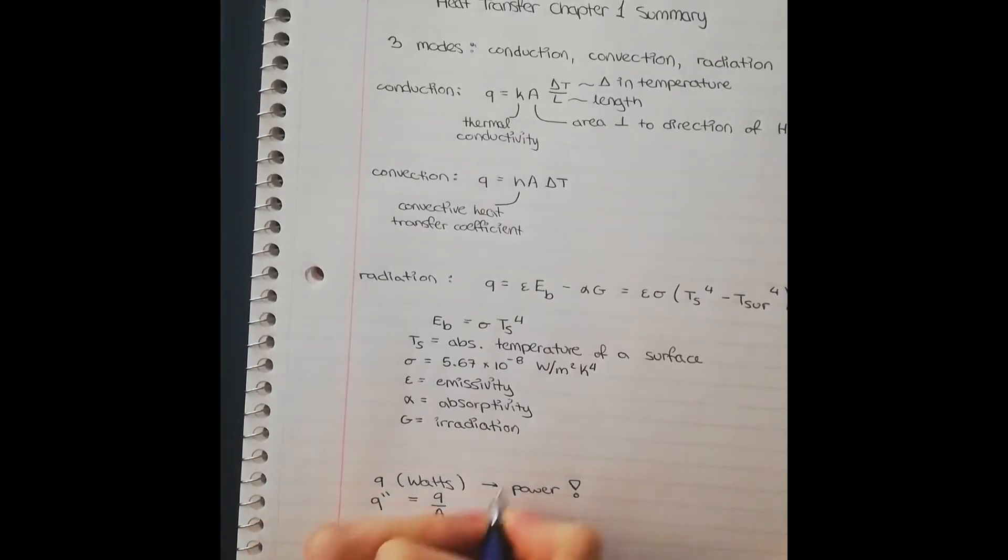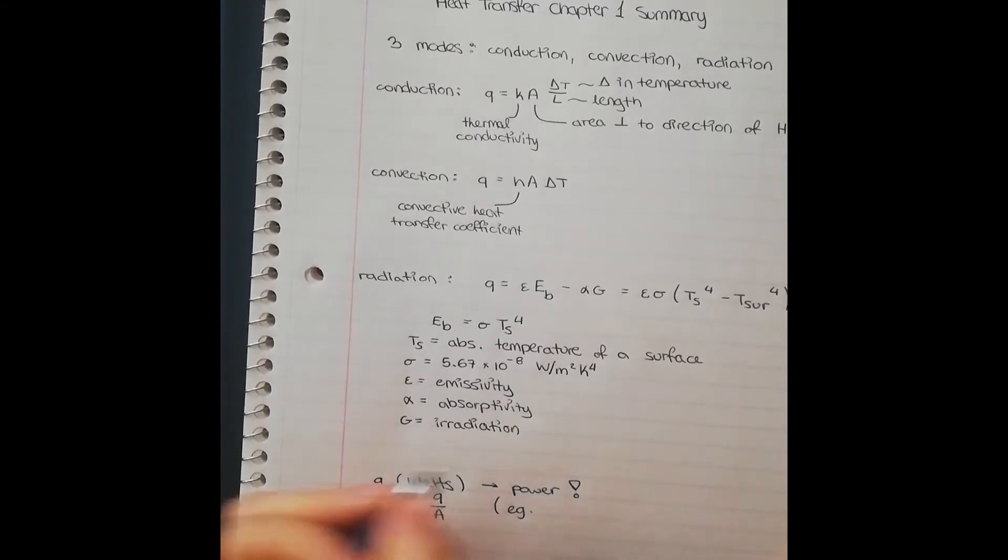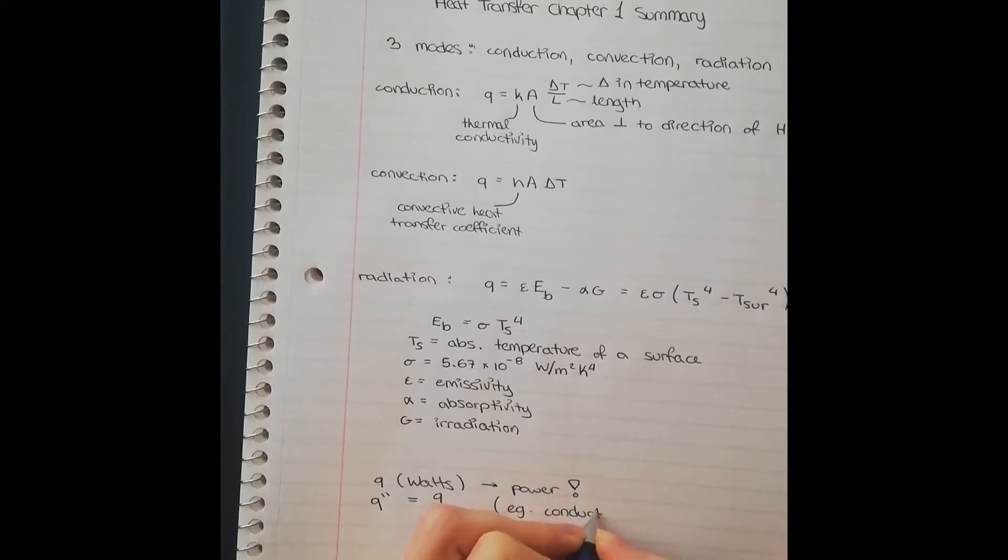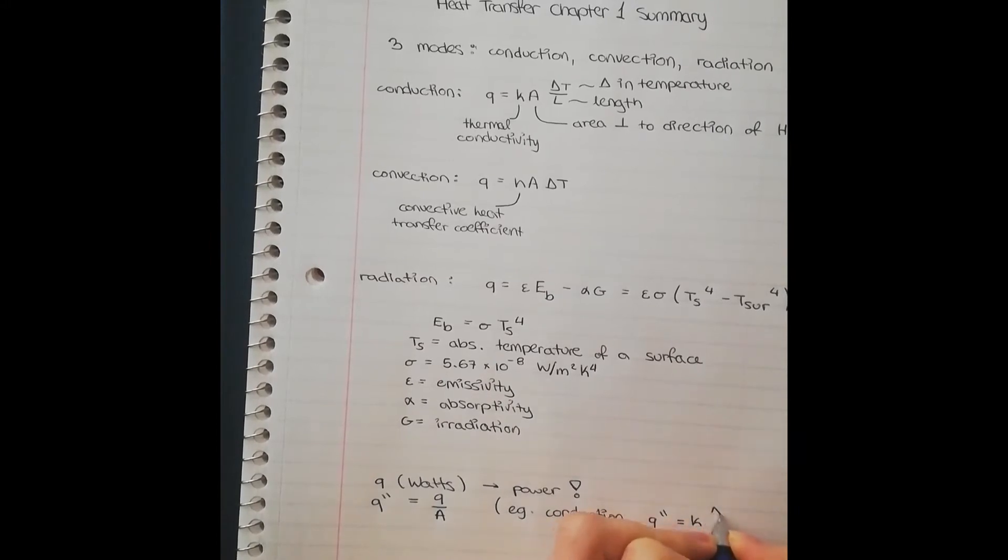So for example, if you want to talk about conduction, you could also say that Q double dash is equal to K delta T divided by L. This often is used when we don't know the area.